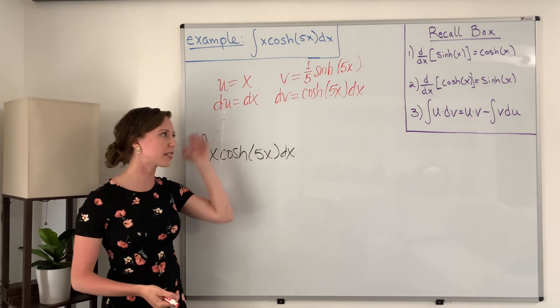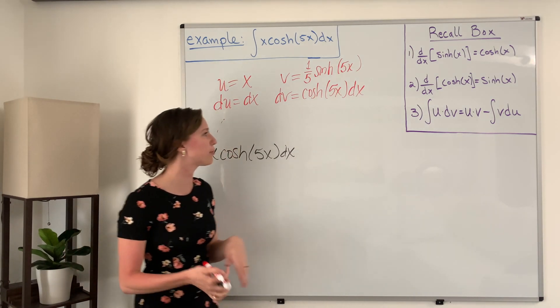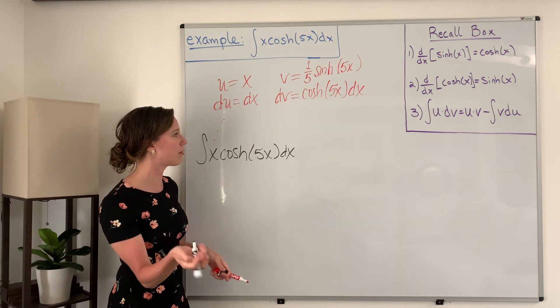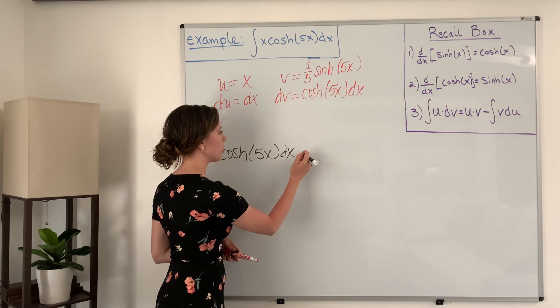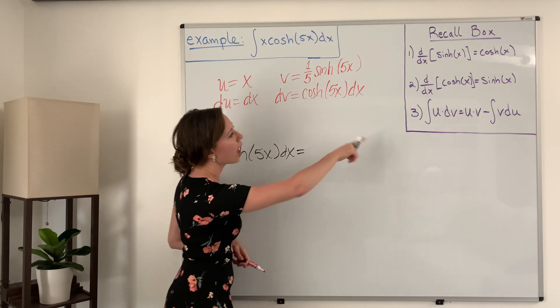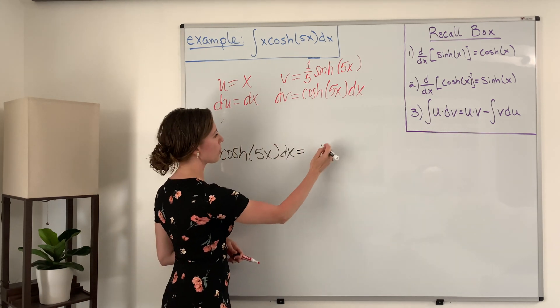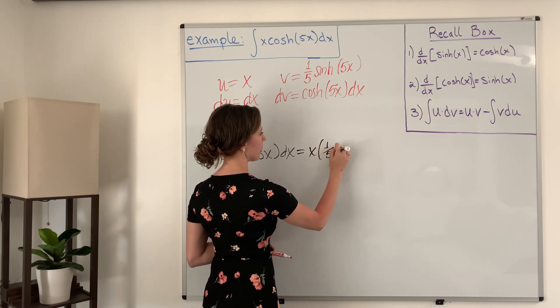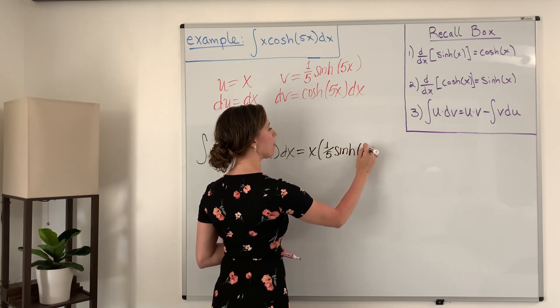And now that we have these, we can basically just plug them in using our formula to find what the integral of this function would be. And so we have this will equal u times v, so x times one-fifth hyperbolic sine of 5x.